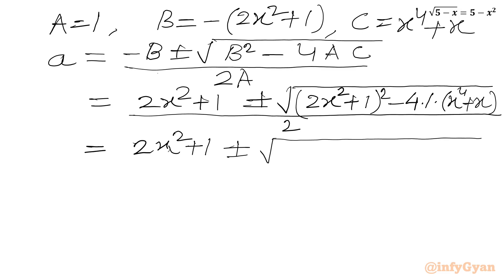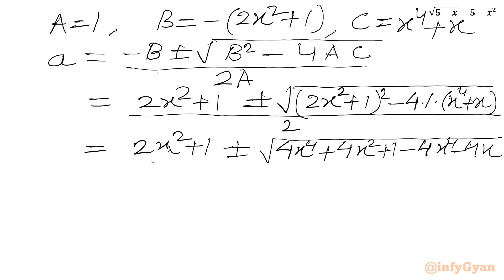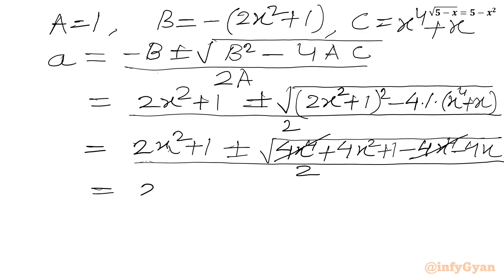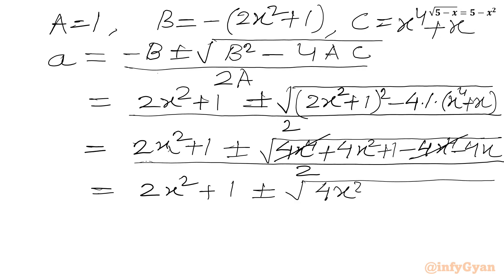Let us expand using the (A plus B)² identity. We can write 4x⁴ plus 4x² plus 1, then minus 4x⁴ minus 4x, all divided by 2. Now we can cancel the plus and minus 4x⁴ terms. So we get 2x² plus 1, plus or minus the square root of 4x² minus 4x plus 1, over 2.